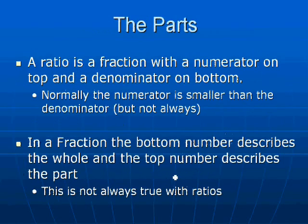So the parts. A ratio is a fraction with a numerator on top and a denominator on bottom. In most cases, but not always, your numerator is going to be smaller than your denominator. In a fraction, the bottom number describes the whole and the top number describes the part. Now this is true in most situations, particularly when we look at sampling and probability.